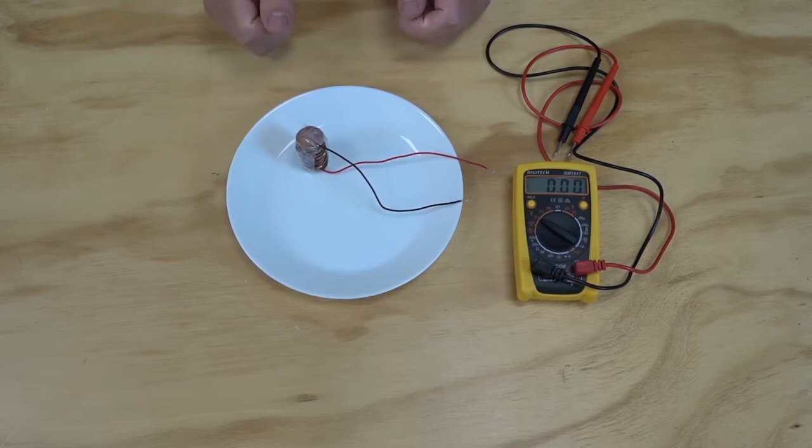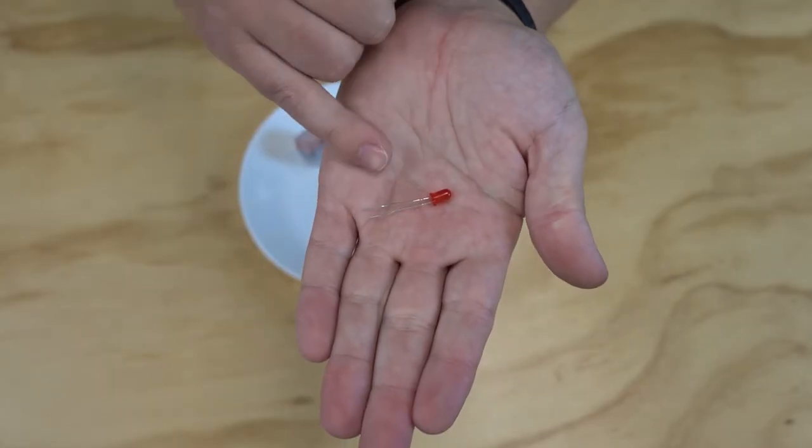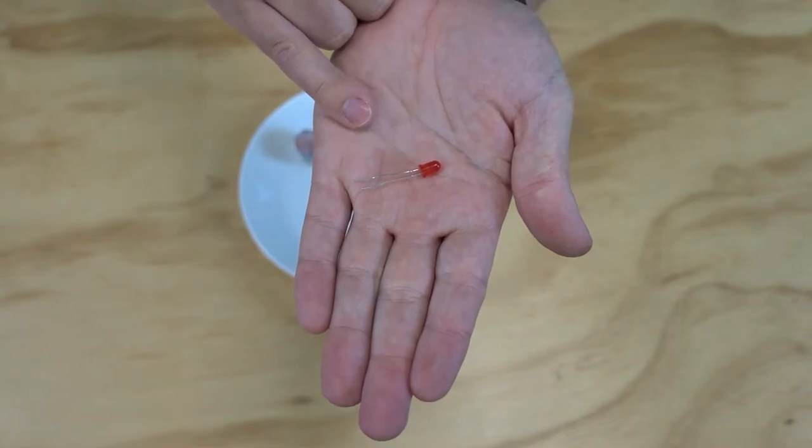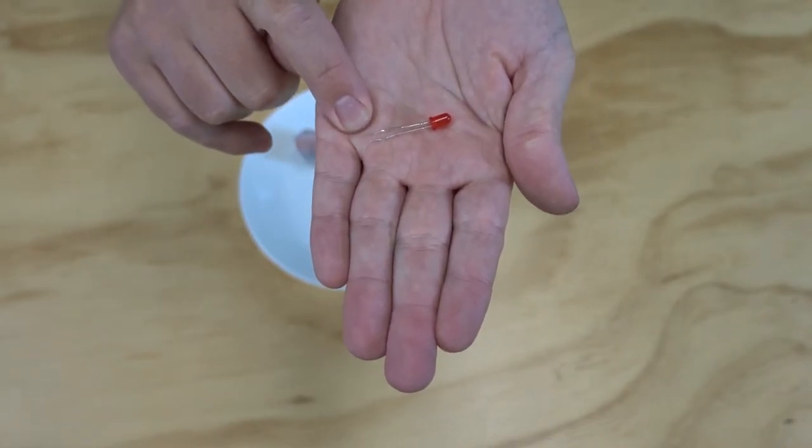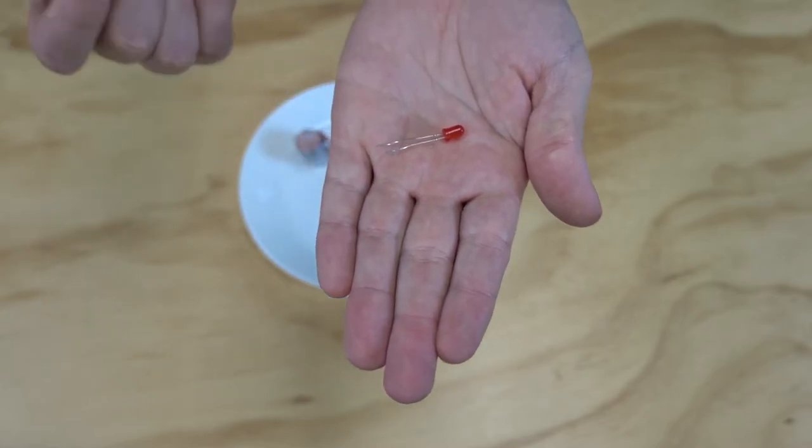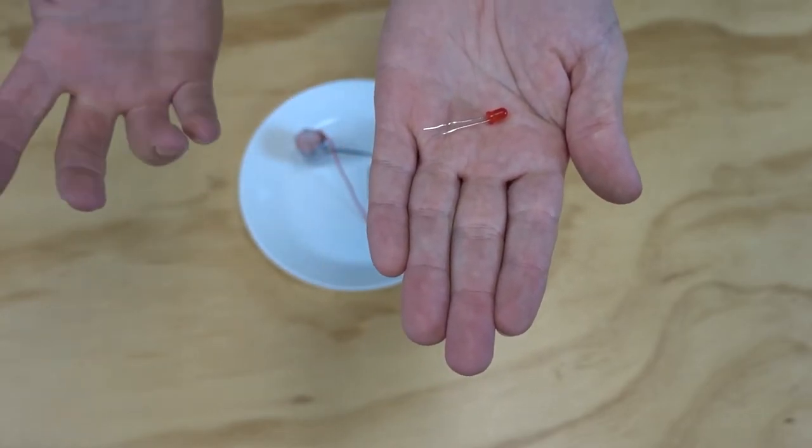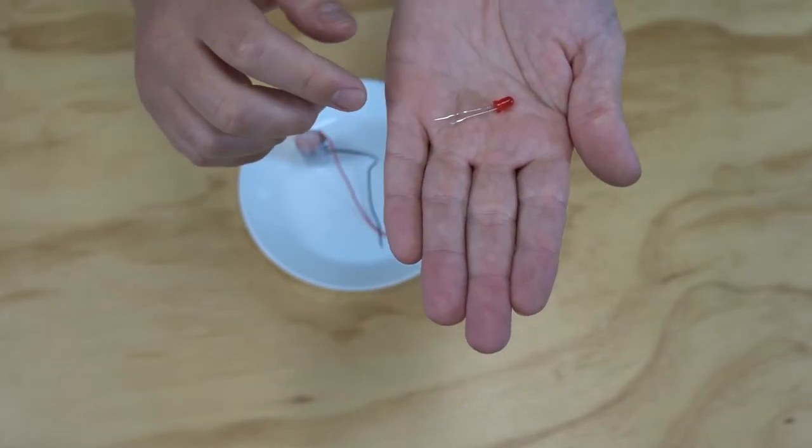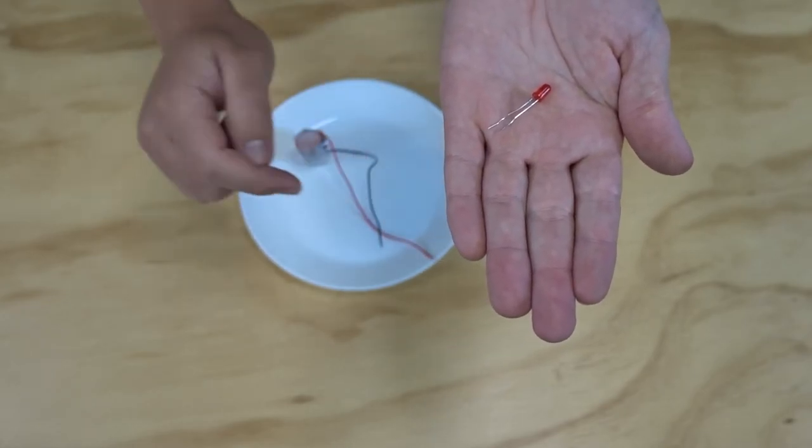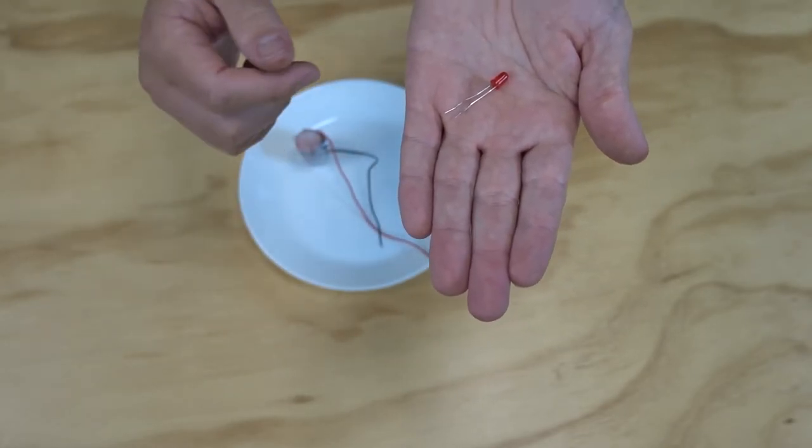Now I'm going to grab my LED to test out. If you look at your LED, you'll notice that the legs are slightly different lengths. The longer leg is the positive, called the anode, and the shorter leg is the cathode, or the negative, usually. What I'm going to do is wrap the longer leg around the red wire and the shorter leg around the black wire.